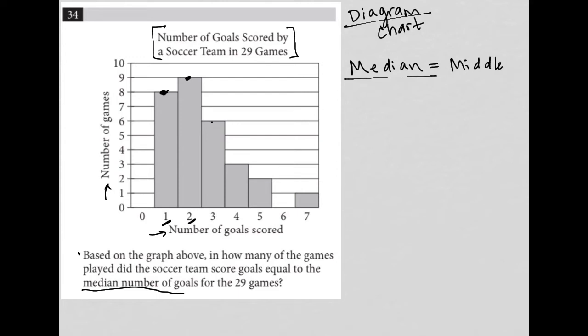What gets tricky here is you have to list out all of the values. So for instance, we know that in eight games the goals scored was one, so I should actually list out the number one eight times: one, two, three, four, five, six, seven, eight — that's how we should list it out.